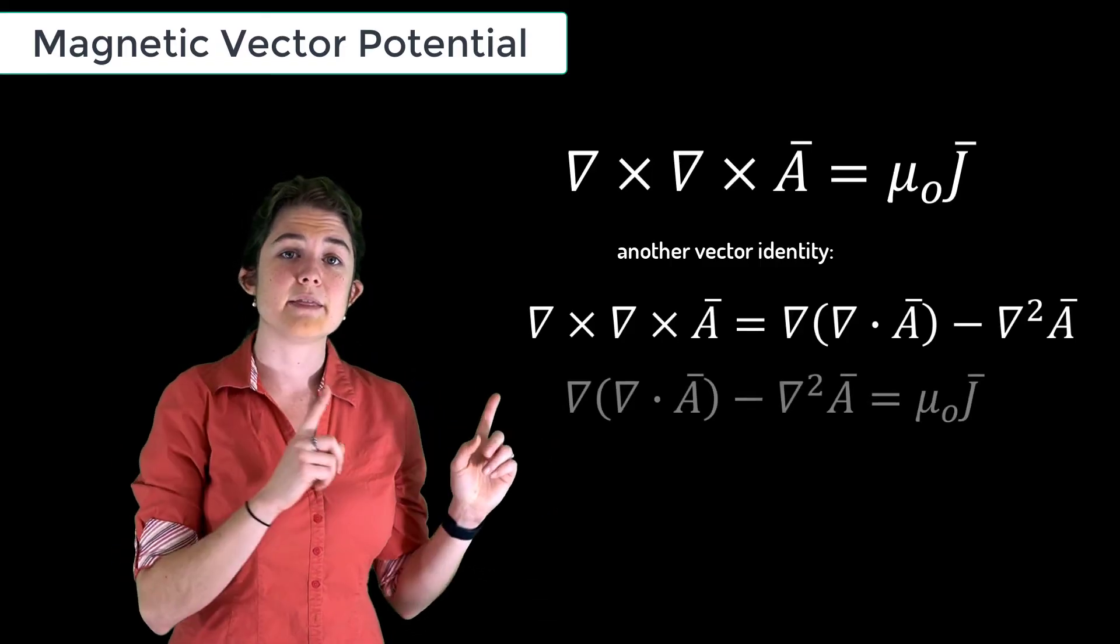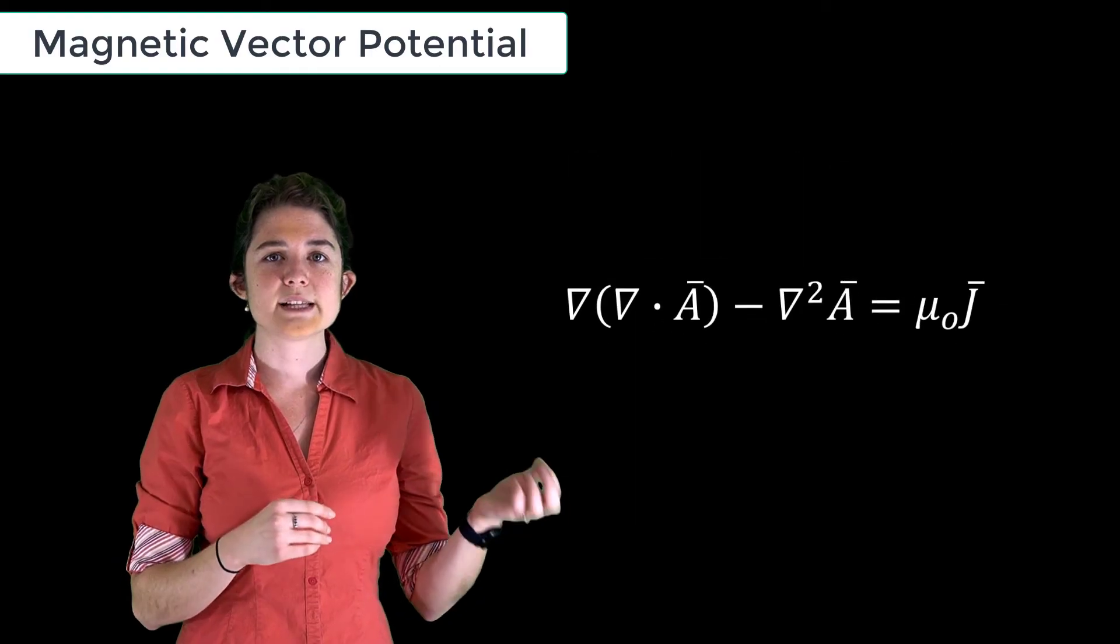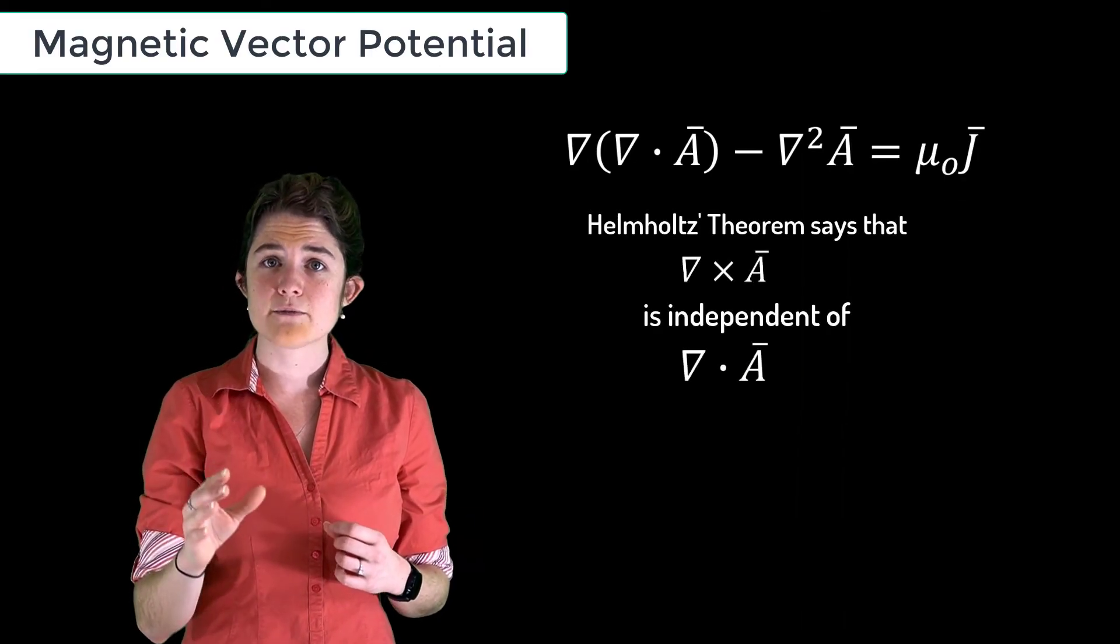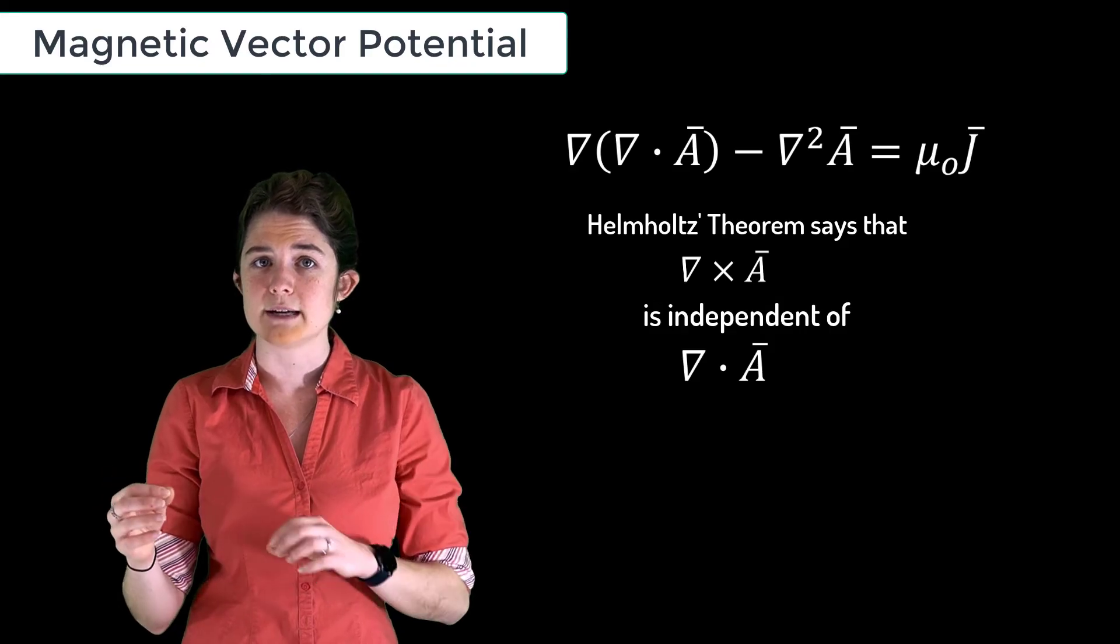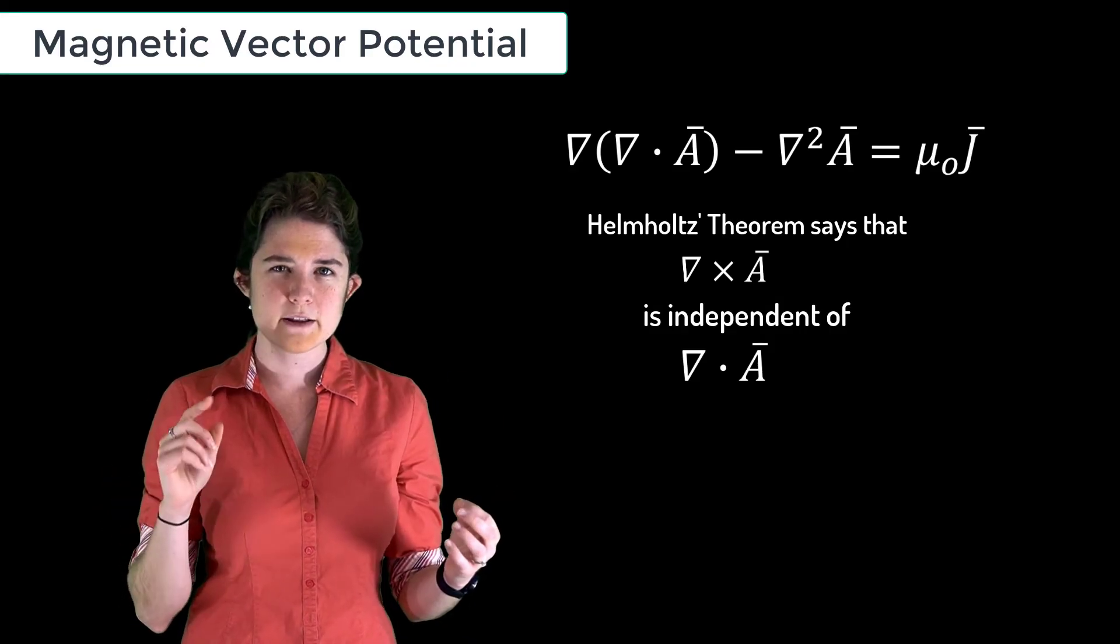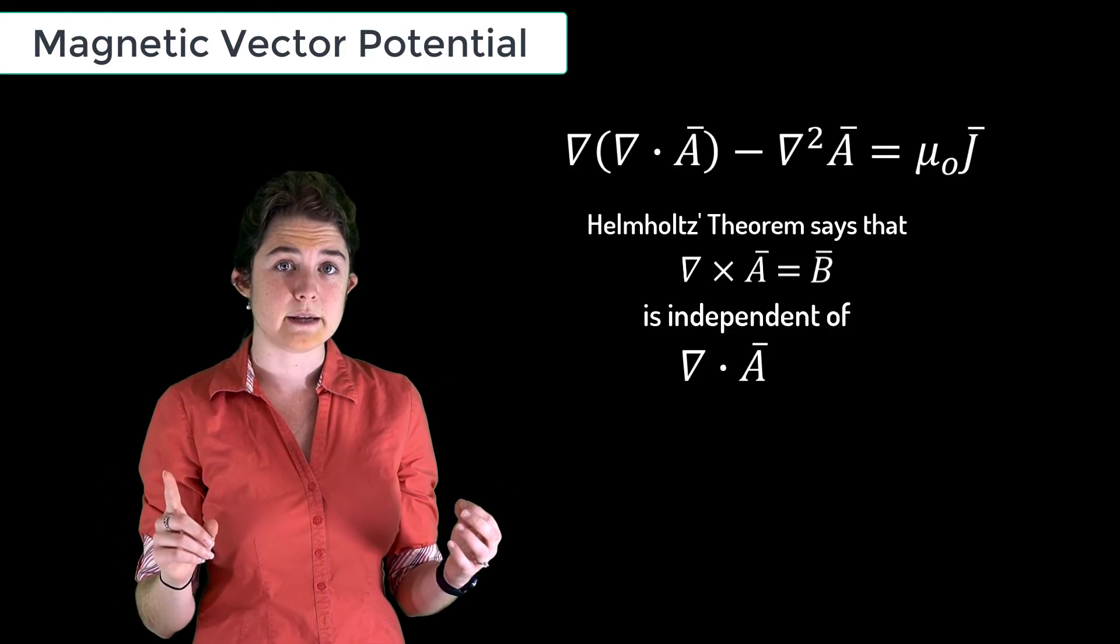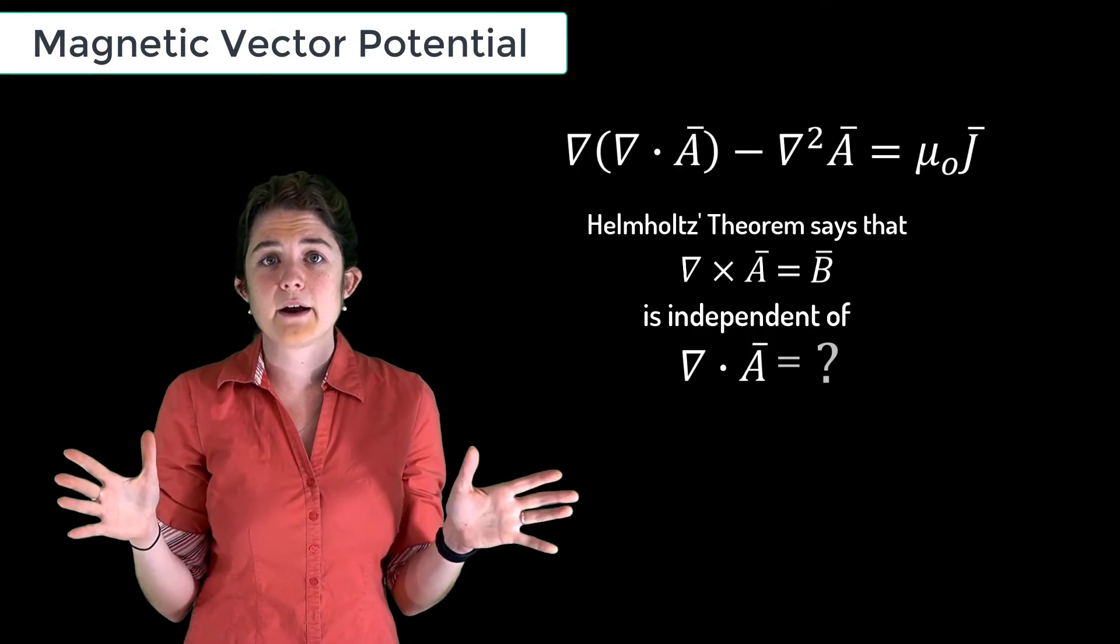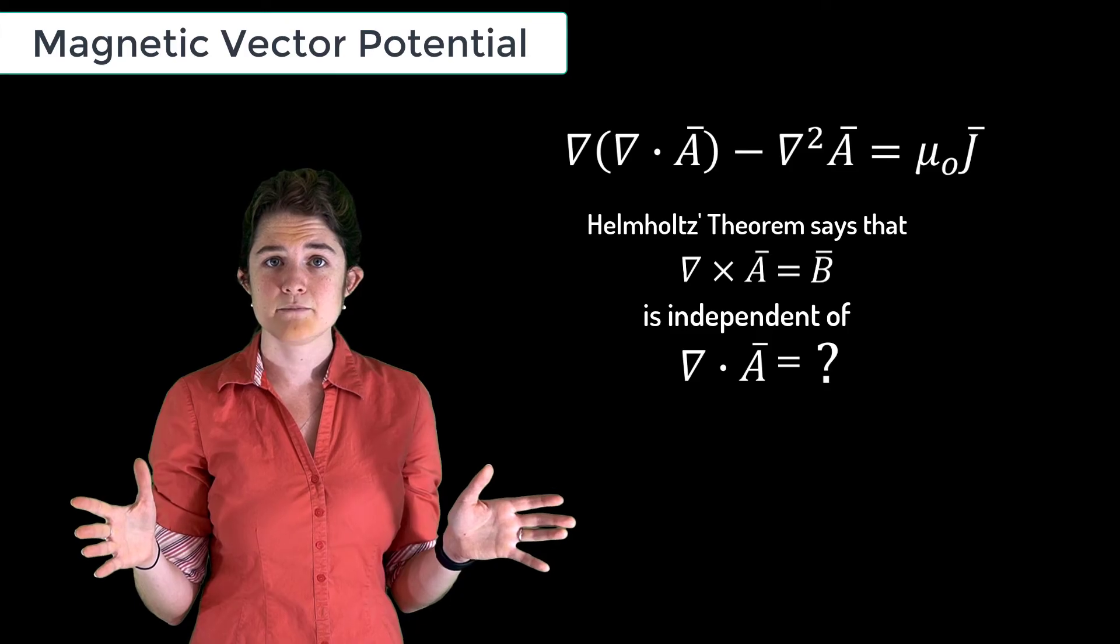We can simplify this further by recalling Helmholtz's theorem, which says that a vector field's divergence is independent of its curl. We define the curl of A as equal to B, but if curl and divergence are independent, we don't care what the divergence of A is. So we can let its divergence be any arbitrary value we like.